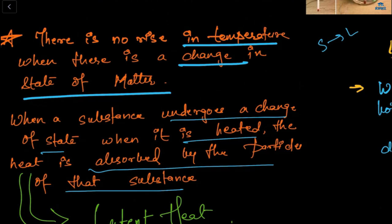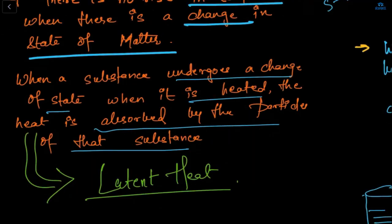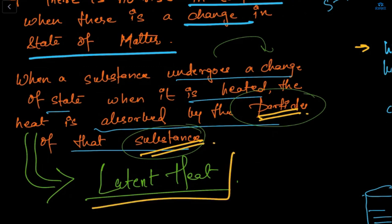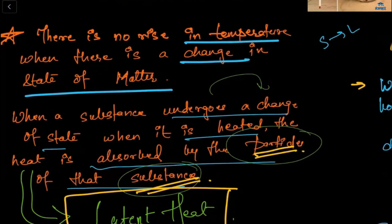When a substance undergoes a change from any state to any other state and is heated, the heat is absorbed by the particles of that substance. That heat is known as latent heat. So if anyone asks you what latent heat is, you say: there is no rise in temperature when we change the state of matter.